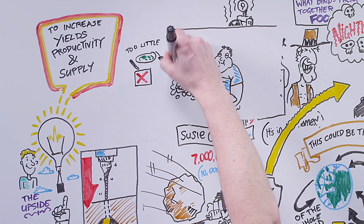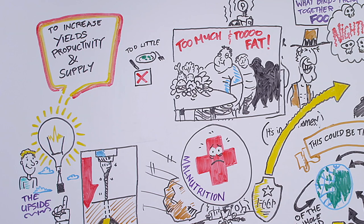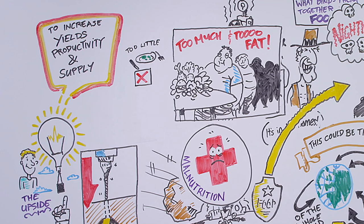In fact, so successful has this been, that the problem for many parts of the rich world is not too little food, but too much food. It's not too many skinny people, but too many fat people. And it's not a medical system which is combating the challenges of malnutrition, but one that is struggling with the challenges of obesity.